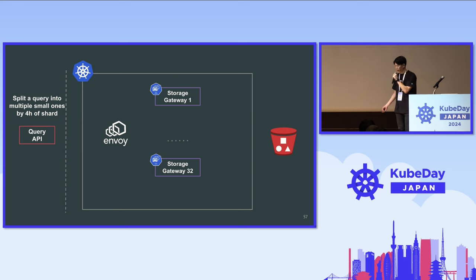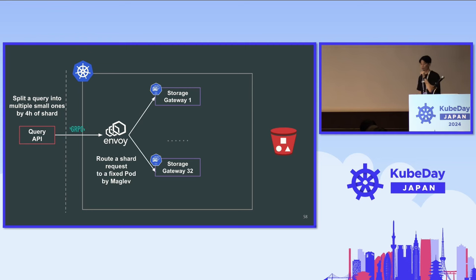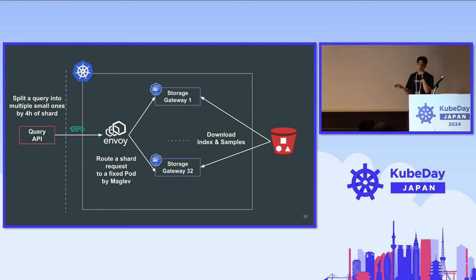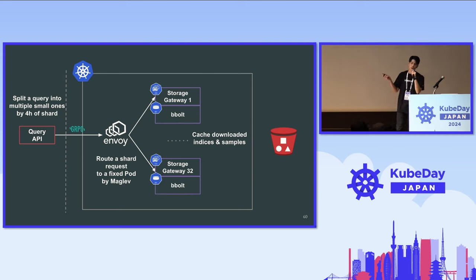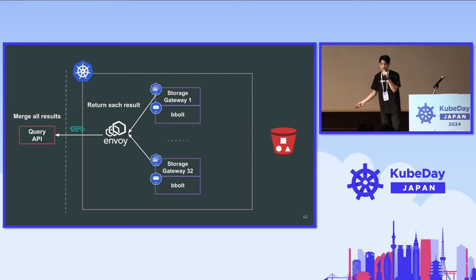Let's look at the architecture. The query API first splits a request into multiple parts according to shard. Each shard request is a query API gRPC call via Envoy. Envoy routes each shard request to a fixed pod by Maglev consistent hashing. Storage Gateway downloads the index and samples, saves data in local cache using bbolt, then returns results via Envoy. The query API merges all results to return to users.